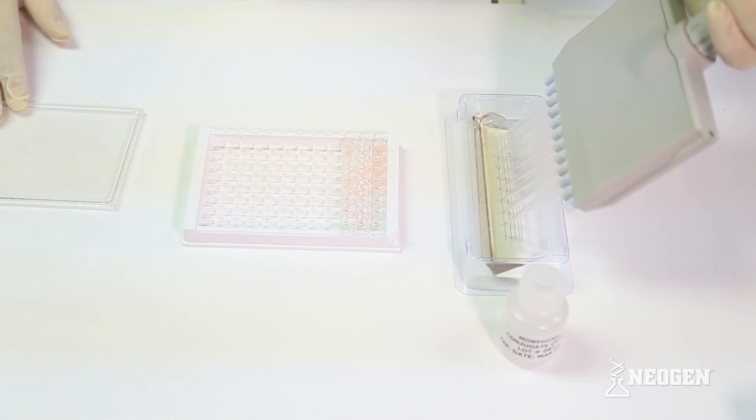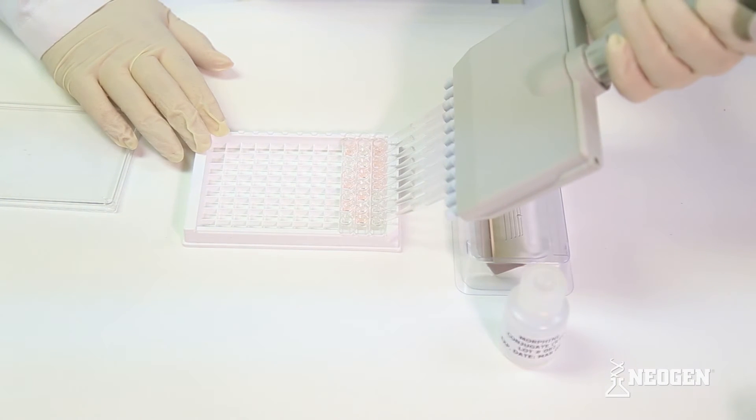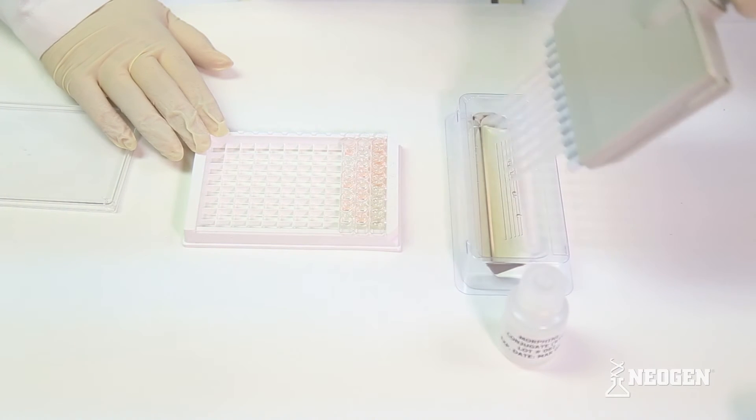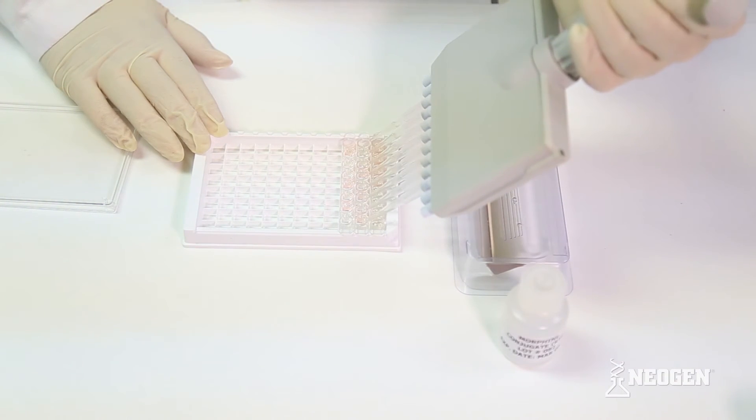Next, add the specified volume of the ready-to-use drug enzyme conjugate to each strip using an 8 or 12 multi-channel pipette for rapid addition. This step is time sensitive, so pipette as quickly and as accurately as possible. It is important to not allow the pipette tip to touch the inside of the well or any of the reagent already inside the well. Doing so may result in cross-contamination and inaccurate results.